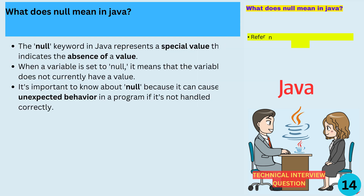What is the null keyword in Java, and what does it mean when a variable is set to null? The null keyword in Java represents a special value that indicates the absence of a value. When a variable is set to null, it means that the variable does not currently have a value. It's important to know about null, because it can cause unexpected behavior in a program if it's not handled correctly.